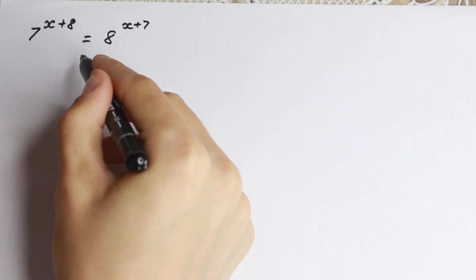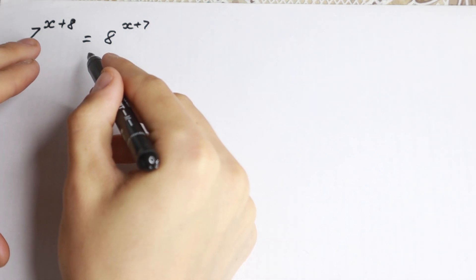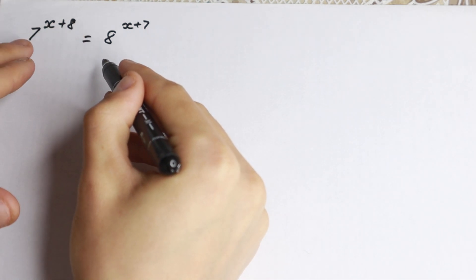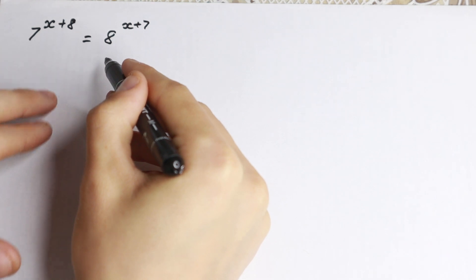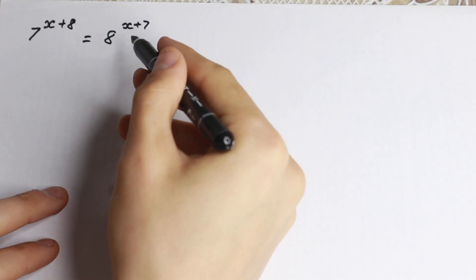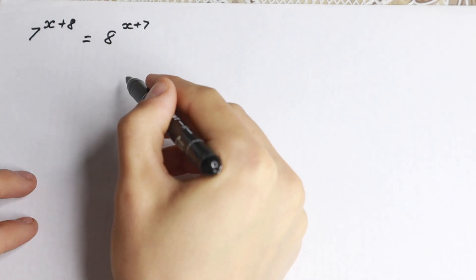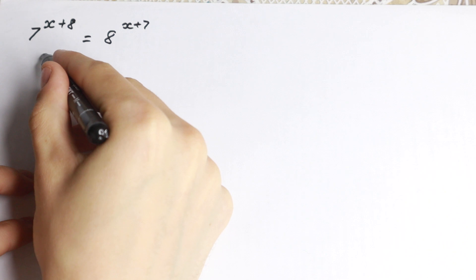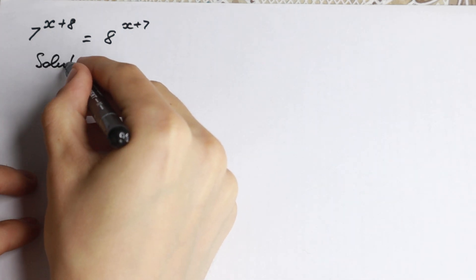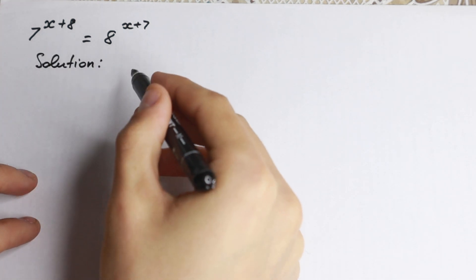On the left hand side we have 7 and 8, and on the right hand side we have 8 and 7 — completely different positions. So let's try to solve it. What is the solution to this interesting problem?